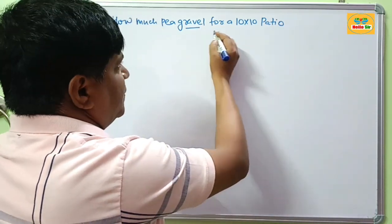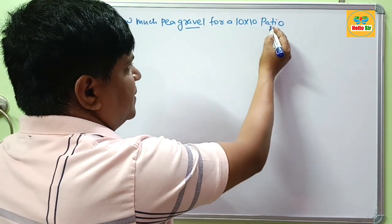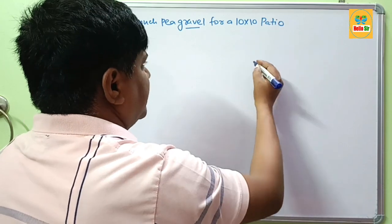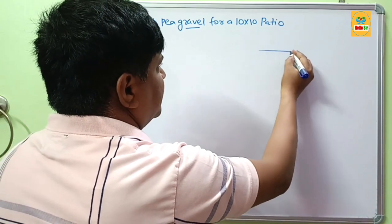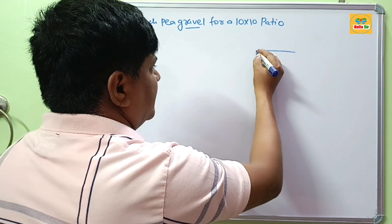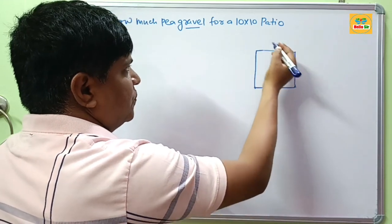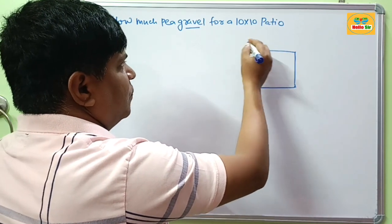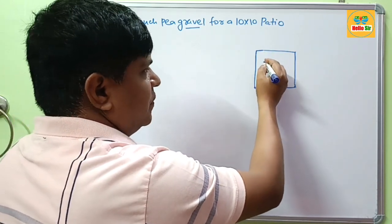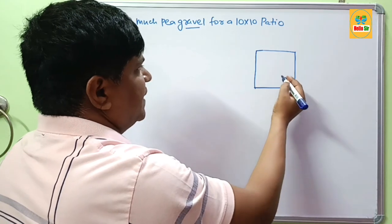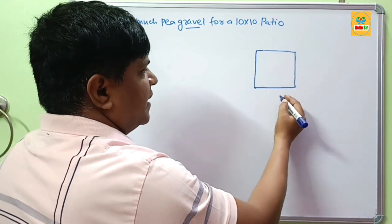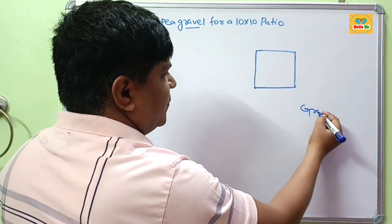It means you have to create a 10x10 patio, and if you want to make a beautiful backyard sitting area, then creating a gravel patio is the best option.